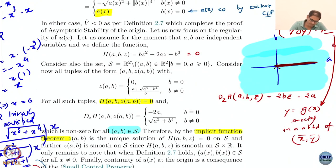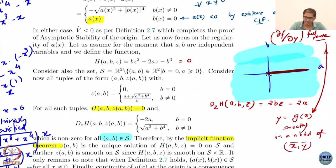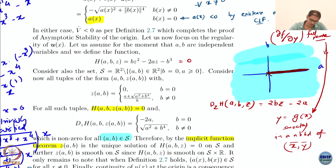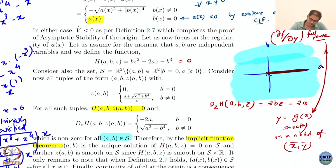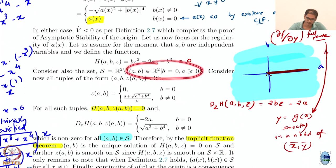So what do we say? We consider this function H of A, B and Z — three variables. I can club these two as one variable and this as one variable. This is a scalar function of three variables equated to 0. Now I also consider the set S in R² which is the set of all A, B except a particular region. Why do you think I removed this region from R²?